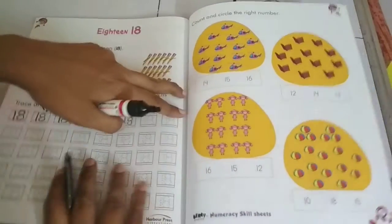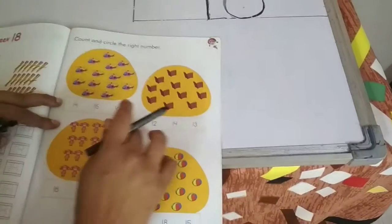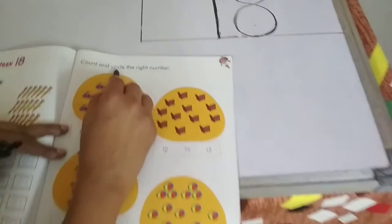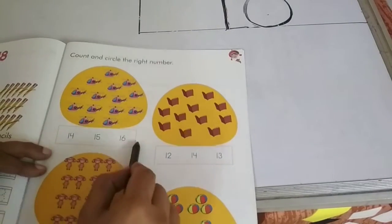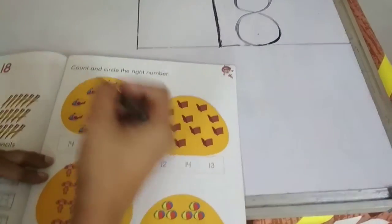So children, you have to finish this page. And next page, you will get your practice time. Count and circle the right number. Here we have three different numbers. Let's count and find the correct number.